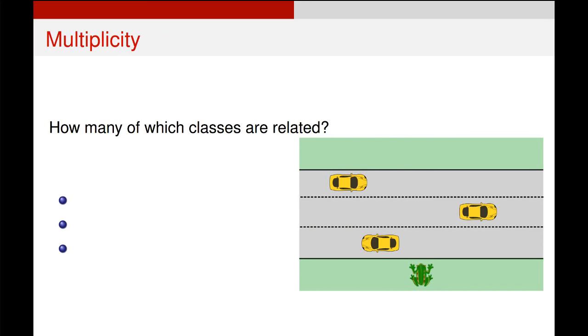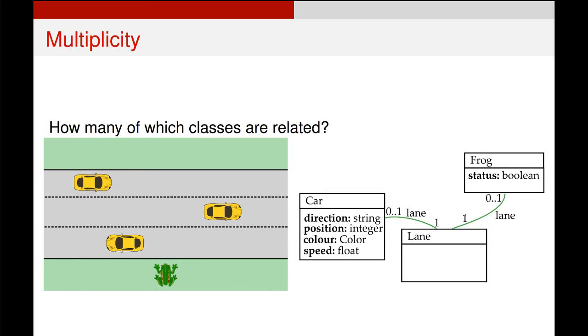Once again we have to ask what is the relationship between these classes. So we had an association with lanes there, but now we need to get an idea of how many objects within those classes might be related to how many objects of other classes. So what we do here is simply add these numbers to each one of these associations.